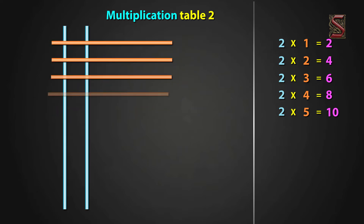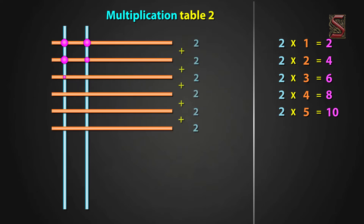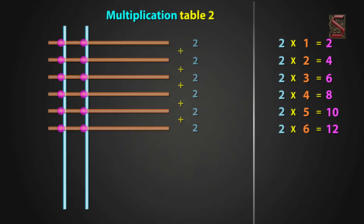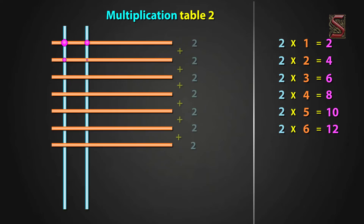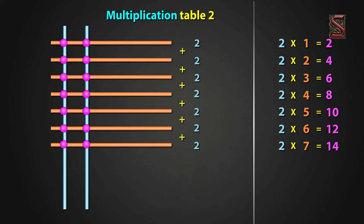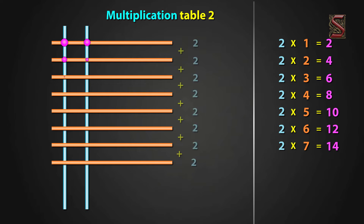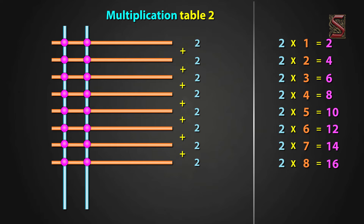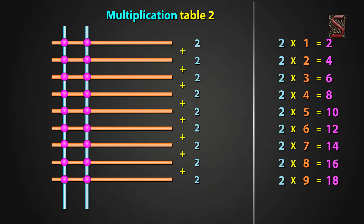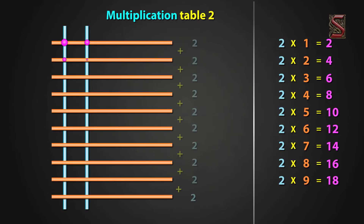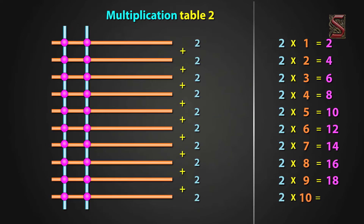2 six times, draw 6 sleeping lines. We have 12 meeting points. Now, 2 six times is equal to 12. 2 seven times, draw 7 sleeping lines. We have 14 meeting points. So, 2 seven times is equal to 14. 2 eight times, draw 8 sleeping lines. We have 16 meeting points. So, 2 eight times is equal to 16. 2 nine times, draw 9 sleeping lines. We have 18 meeting points. Now, 2 nine times is equal to 18. 2 ten times, draw 10 sleeping lines. We have 20 meeting points. Now, 2 ten times is equal to 20.